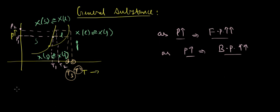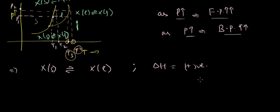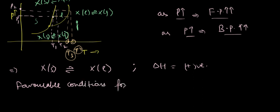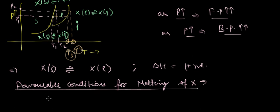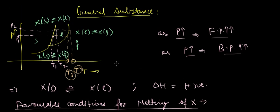Now let's look at the reaction where X(s) is converting into X(l), and we know that delta H for this reaction is positive. So what are the favorable conditions for melting of X? As it is an endothermic process, first we write high temperature, which is obvious. Now let us comment on whether we need high pressure or low pressure. For melting of X we want the substance to be in liquid phase, and we want low pressure.